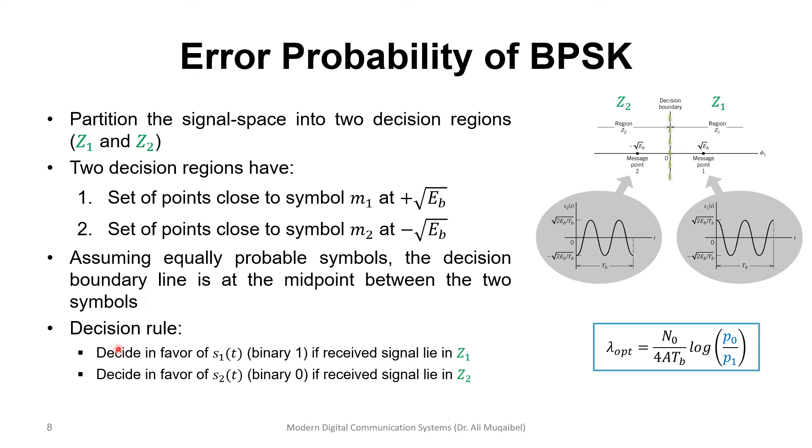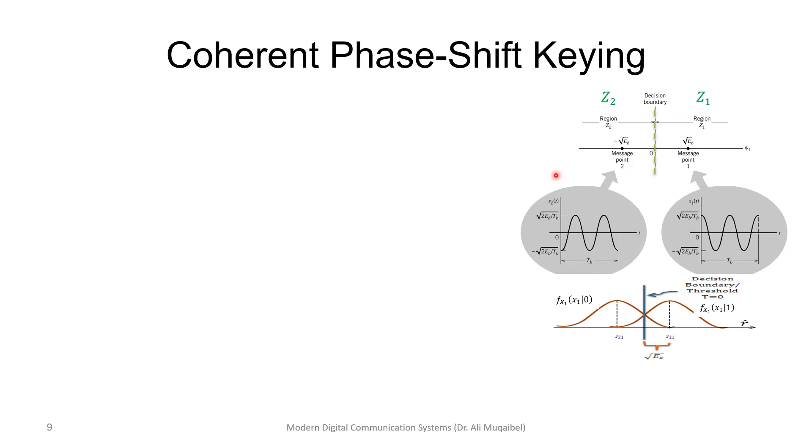So, we just mentioned the decision rule. Decide in favor of S1, binary 1, if the received signal lies in Z1 area. And decide in favor of S2, or binary 0, if the received signal lies on this side of the spectrum of the region. Now, if you want to look at the probability of error for the phase shift keying, and we're dealing with coherent, because we assume that we are correlating with the basis, which means we know the exact phase that was transmitted, so we call it coherent.